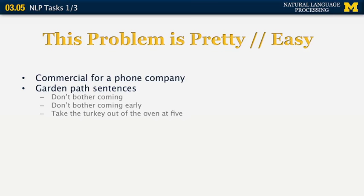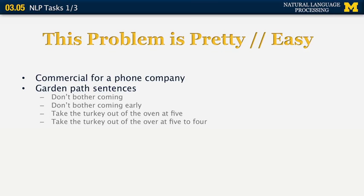Here are some other examples. 'Take the turkey out of the oven at five' — this is an instruction you give to somebody at your home. If they only hear that part, they're going to take the turkey out at five o'clock. But what you really meant was 'take the turkey out of the oven at five to four,' which is a very different thing. If they wait until five o'clock, chances are it will be overcooked.